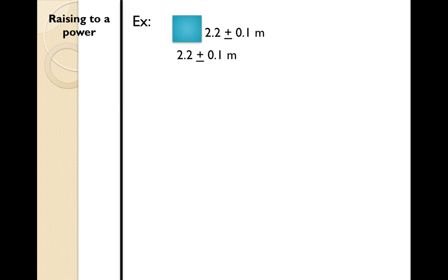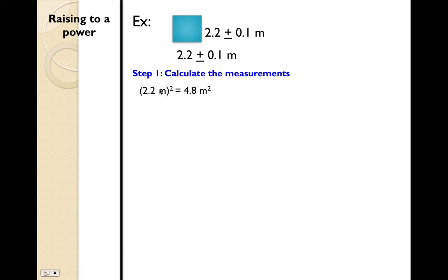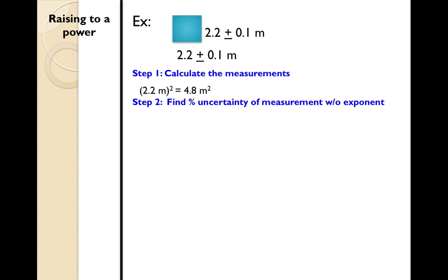Here is an example: a square with exact measurements on all sides and a plus or minus of 0.1 meters. The first thing you want to do when finding the area is to calculate the measurement — area equals 2.2 meters squared, which is 4.84 meters squared. The next step is to find the percent uncertainty of the measurement without the exponent: 0.1 divided by 2.2 gives 4.5% uncertainty.